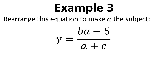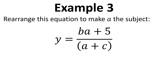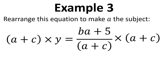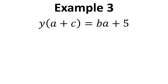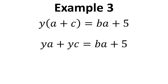The third example is even more complicated. The first step is to get rid of the fraction on the right hand side. We're going to multiply both sides by A plus C in brackets so that cancels on the right hand side and we're left with Y times A plus C equals BA plus 5. We're now going to multiply out that bracket on the left hand side, giving YA plus YC equals BA plus 5, which is important because we need to separate out the terms.